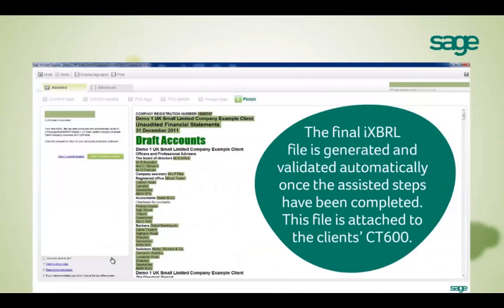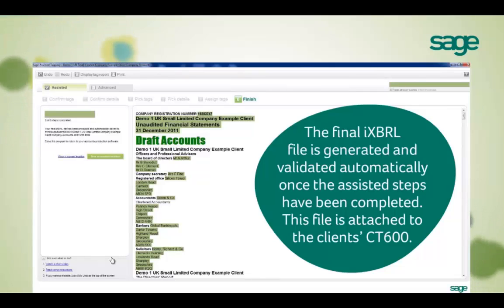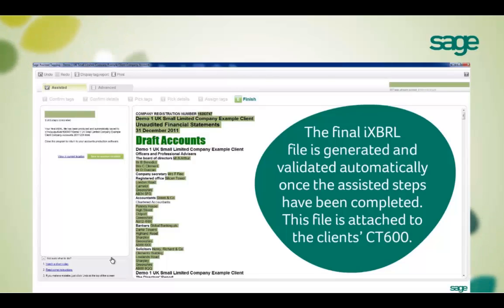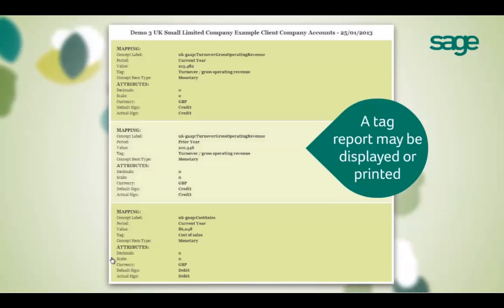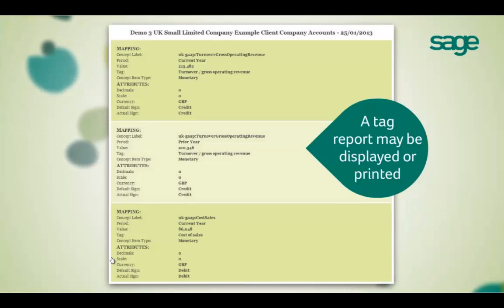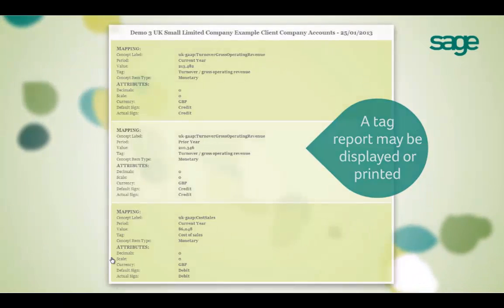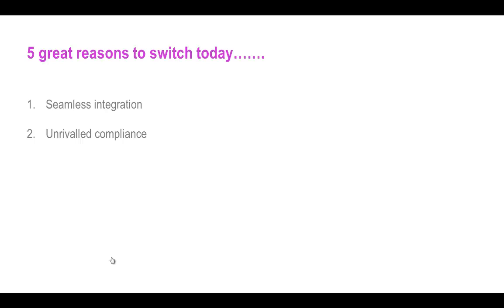Once you've completed the six steps, the final IXBRL file is generated and this HTML file is attached onto your Corporation Tax submission. You also need to submit a tagged Corporation Tax computation, which is done automatically using Sage Corporation Tax. If you wish to see exactly what has been tagged, our Assisted Tagging Tool can also produce a full tagging report, which you can save or print for future reference. However, this isn't required as part of the normal submission.